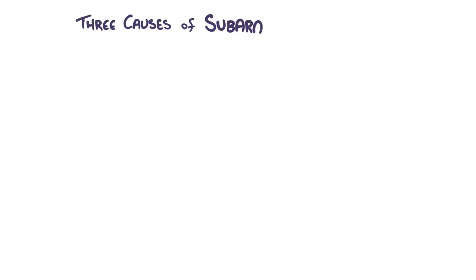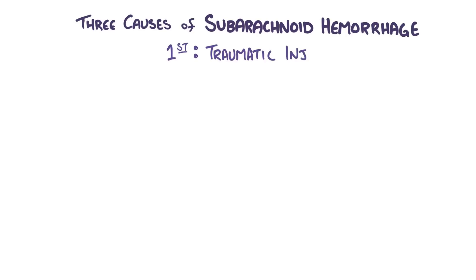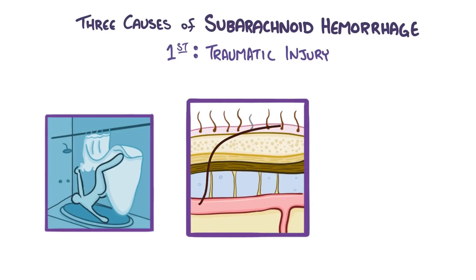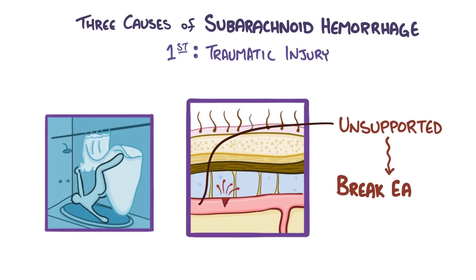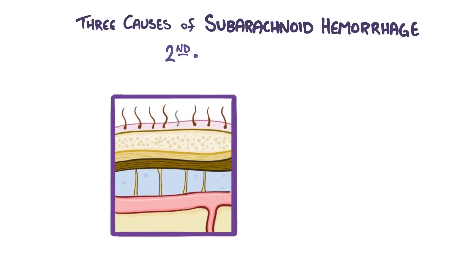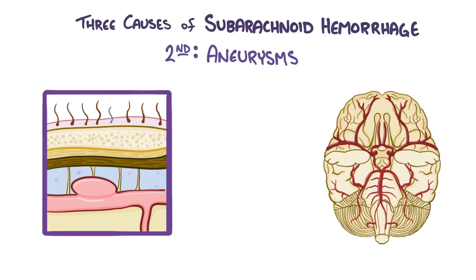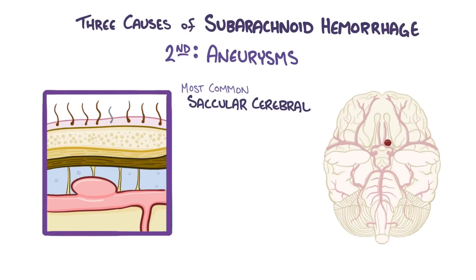Three things can cause a subarachnoid hemorrhage. The first and most common cause is a traumatic injury, like falling in the bathtub and hitting your head. Arteries in the subarachnoid space are unsupported and can easily break. The second cause is an aneurysm, which is a blood vessel that has weak walls and starts to bulge out to about one and a half times larger than its normal diameter. The most common aneurysms in the brain are saccular cerebral aneurysms, which have a characteristic rounded shape on one side of the artery and are also called berry aneurysms.